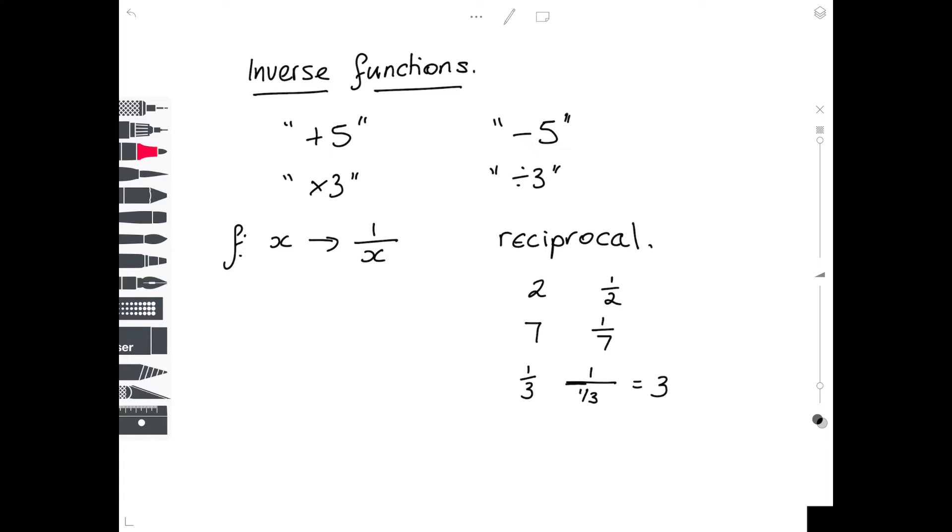I'll show you how that works. So if this line, this 1 over line, you can think of as being divided by. So 1 over 2 really means 1 divided by 2. 1 over 7 means 1 divided by 7. So 1 over a third means 1 divided by a third. When you divide by a fraction, you effectively turn the second number upside down and multiply. So I've turned this upside down. We've got 3 over 1. 1 times 3 over 1 is a 3.